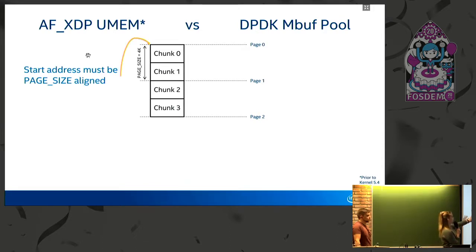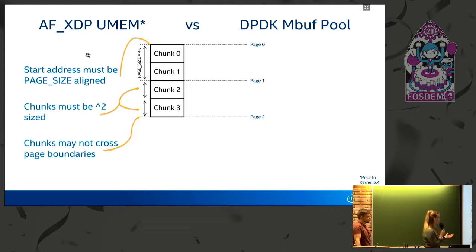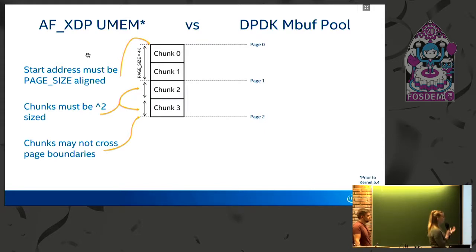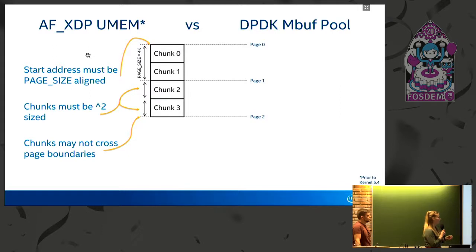The first restriction was that the start address of the umem had to be page-size aligned — 4k in most cases. The chunks within the umem had to be power-of-two sized, and as a side effect of that, chunks could not cross page boundaries. In a networking use case that leaves you with really only two potential chunk size options: either 2k or 4k. Anything bigger than 4k crosses the page boundary, and anything smaller than 2k isn't big enough for a networking use case.